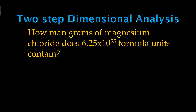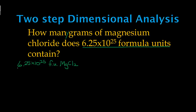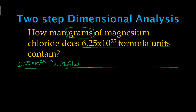Now the next problem: how many grams of magnesium chloride does 6.25 times 10 to the 25th formula units contain? We start with 6.25 times 10 to the 25th formula units of magnesium chloride, MgCl2, on the far left. We need to end up with grams, but we cannot go from formula units to grams directly — we have to go to moles first. So we go to moles of magnesium chloride, then to grams of magnesium chloride.